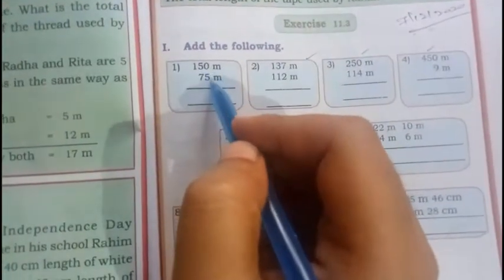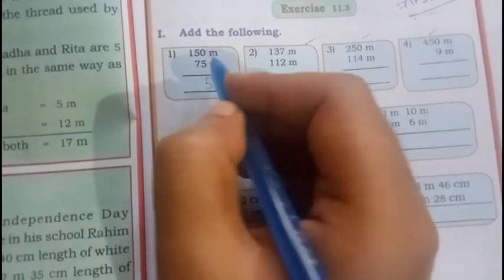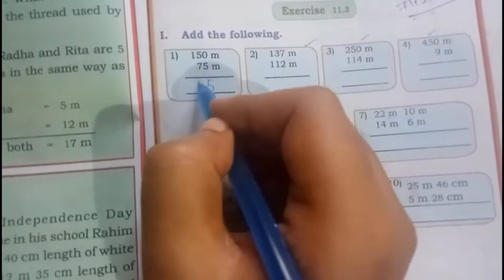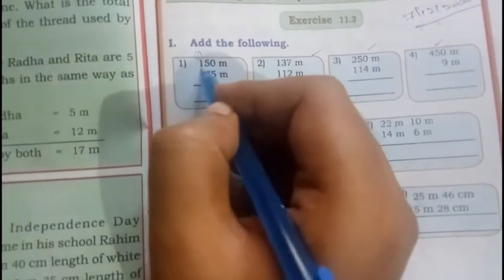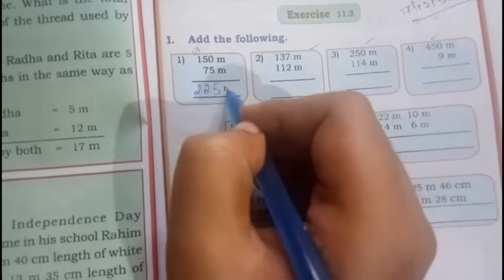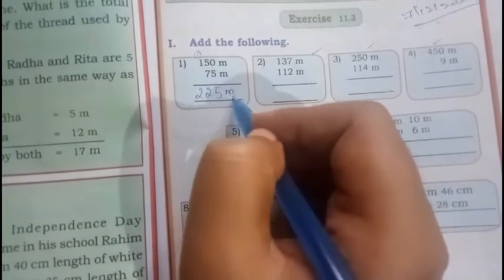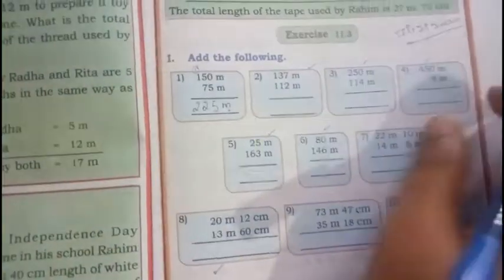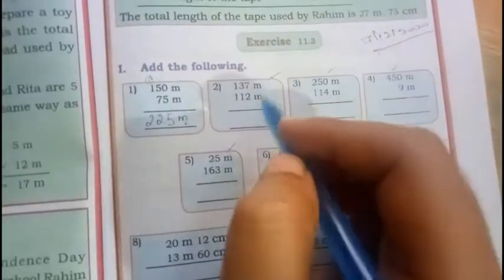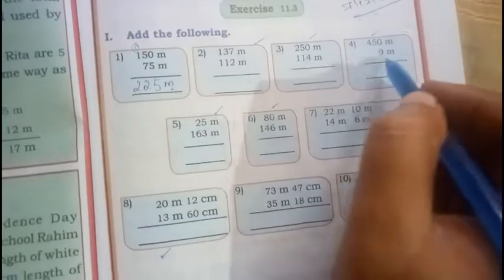Here, 0 plus 5 is 5, 5 plus 7 is 12, 1 carry, 1 plus 1 is 2 meters. You need to write this M, M only. M is nothing but meters, okay? CM means centimeters.